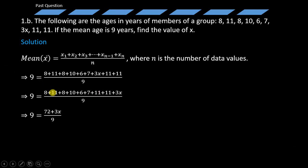Now adding the values, you get to realize that 8 + 11 is 19, then + 8 gives you 27, + 10 is 37, + 6 is 43, + 7 is 50, + 11 is 61, and then + 11 is 72. And that is what you see right here. Then we add our 3X.